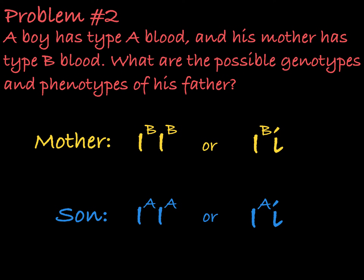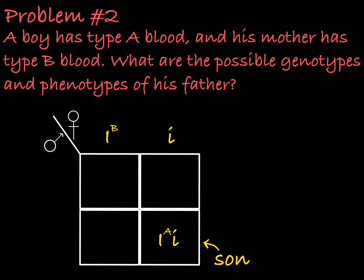Given that the son does not have a possibility of having an ib allele, the mother must be heterozygous, passing on her little i to her son, meaning the son must also be heterozygous. Now that we know the mother passes on the recessive little i allele, that means the son must receive his ia allele from his father, meaning his father must have one ia allele in his genotype.